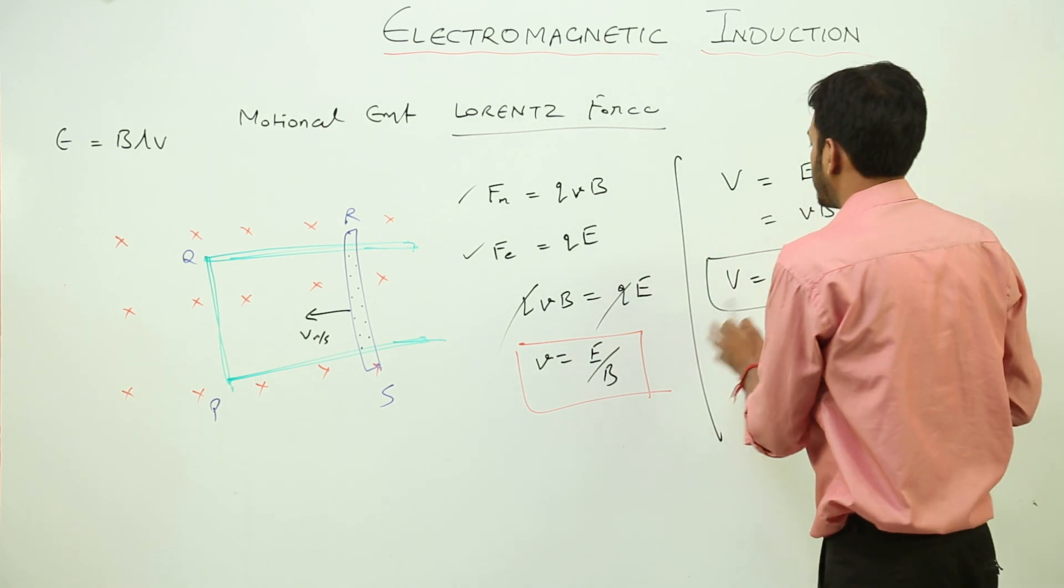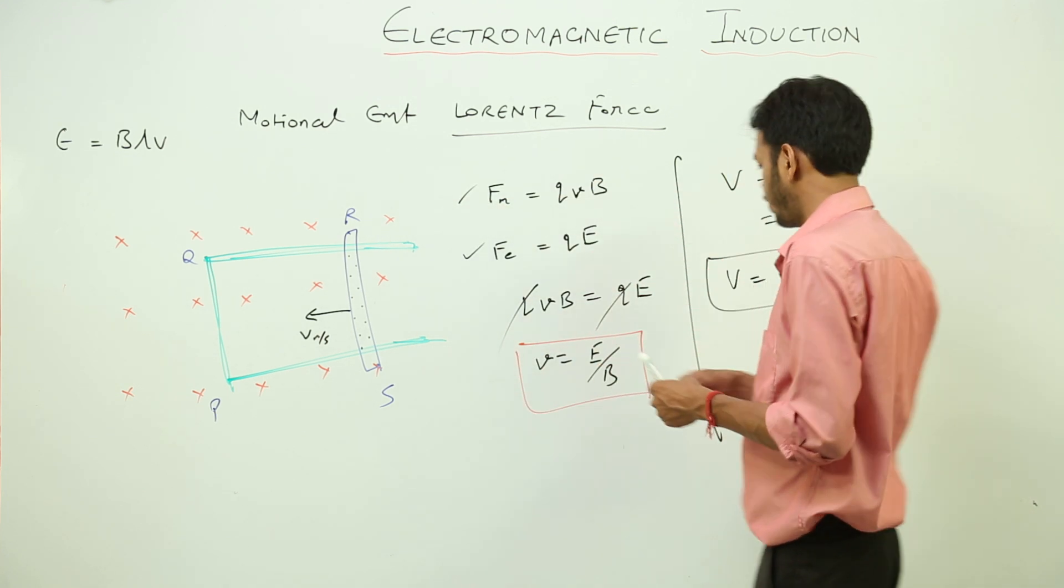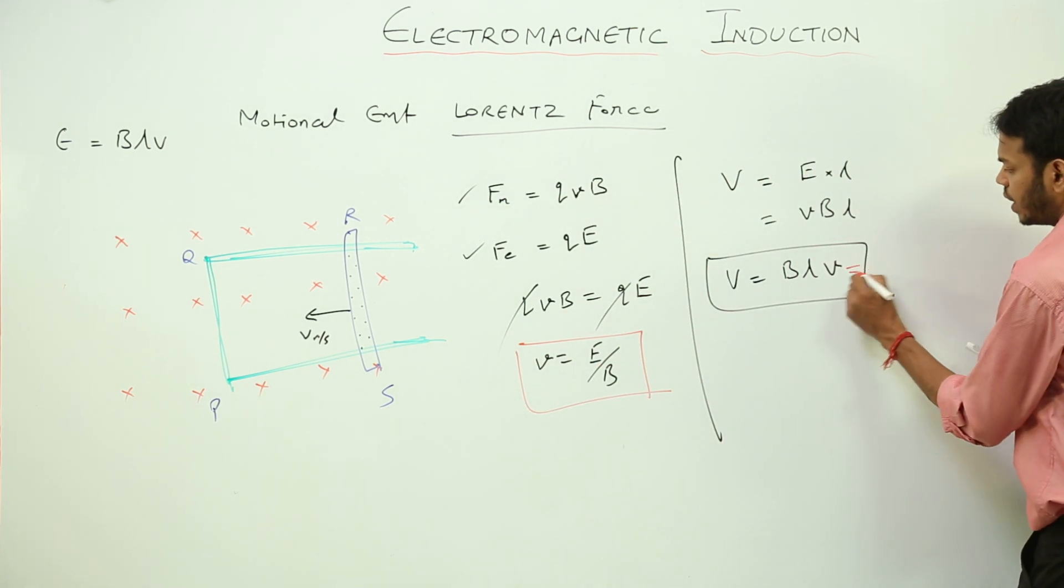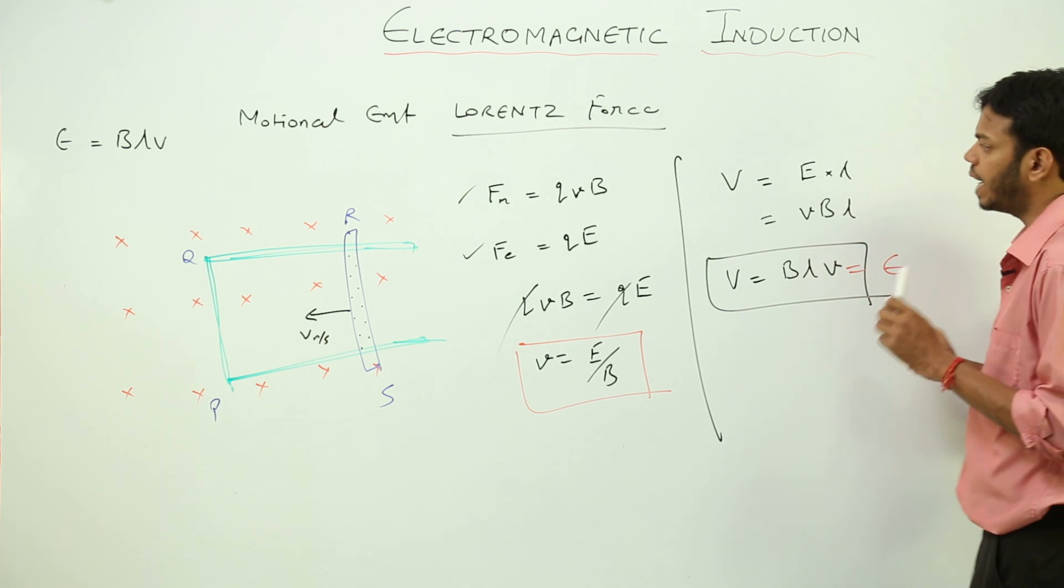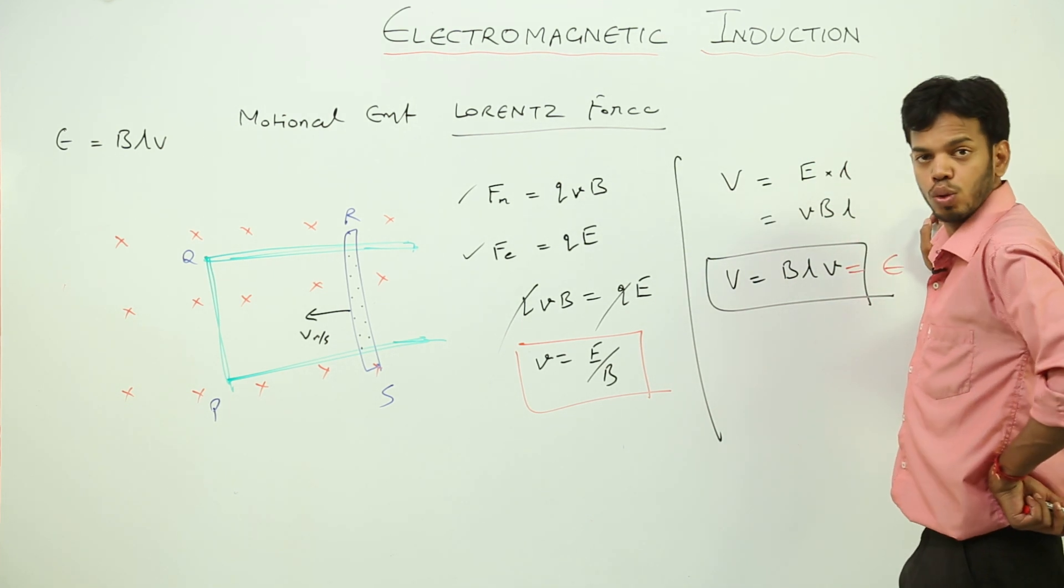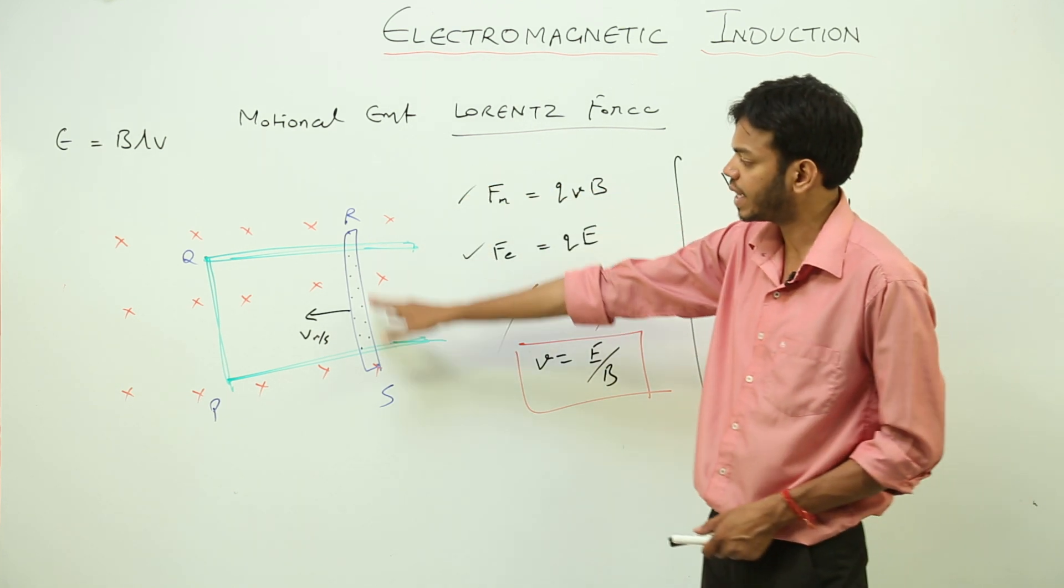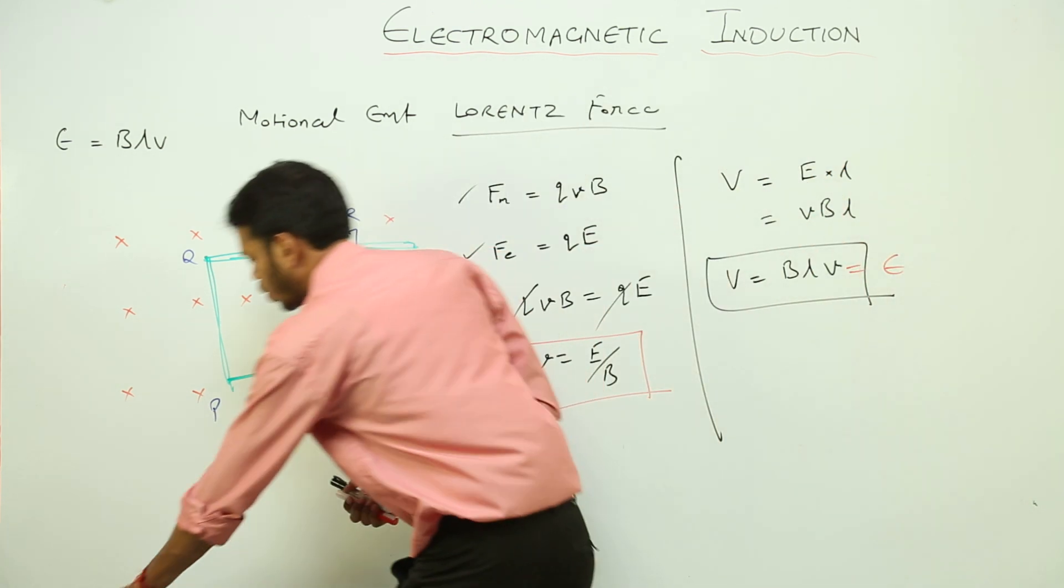This is the expression for the induced EMF produced in this conductor which I can write as E which is BLV. Now, another thing, what else can we deduce from here? Can we find the force experienced by this conductor? Let us find out the force.